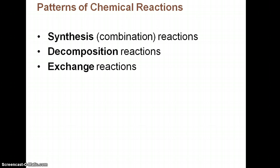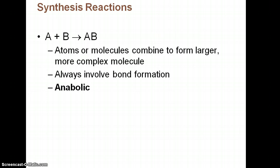We have synthesis reactions, or combination reactions, where we're actually making something — you're synthesizing it. 'Syn' means together. Decomposition — think rotting bodies — you're breaking larger molecules apart. And exchange reactions are kind of self-explanatory. In synthesis reactions, we've got A, we've got B, and then we've got AB. We're taking small molecules or atoms and combining them to form larger, more complex ones. This is anabolic — think an anthill, where ants work together to make a large anthill. This always involves bond formation.